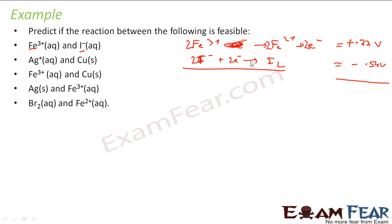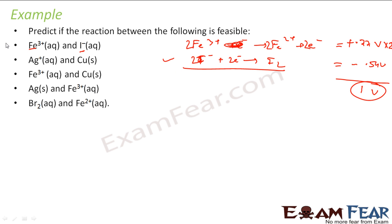In this case we multiply the Fe³⁺/Fe²⁺ half-reaction by 2, so 0.77 × 2 = 1.54 V. Adding minus 0.54 gives a net value of about 1.0 V, which is positive. So this reaction is feasible.